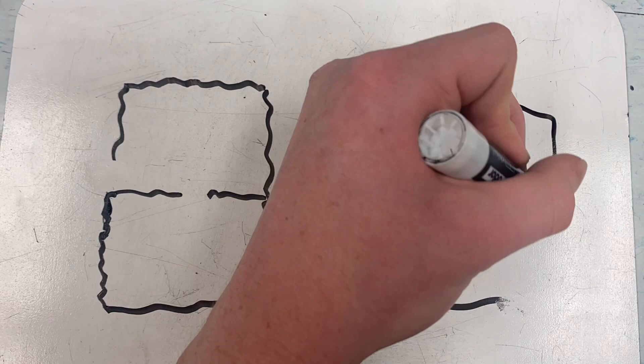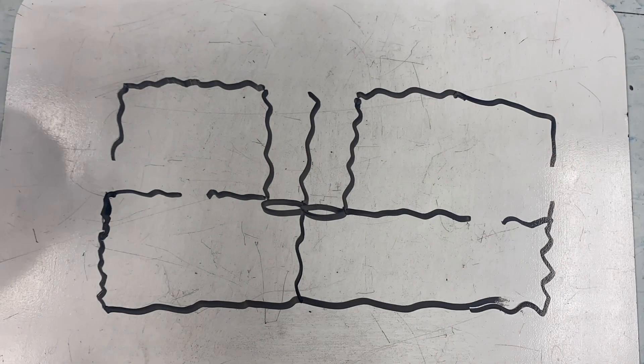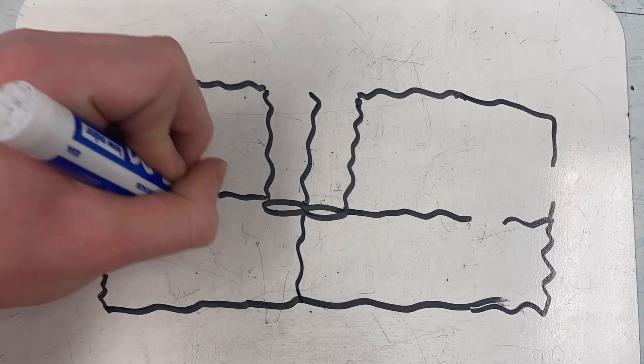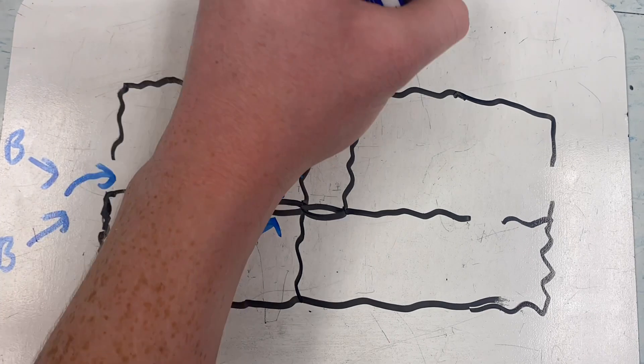So on the left here, you can see blue arrows, which indicates deoxygenated blood coming from the body. And this deoxygenated blood goes through the heart,